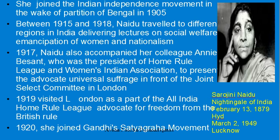Sarojini Naidu joined the Indian Independence Movement in 1905 at the time of the partition of Bengal. Between ages 15 and 18 she traveled to different regions of India delivering lectures and trying to understand the social welfare requirements of Indian women. In 1917, along with Annie Besant of the Home Rule Movement, she formed the Women's India Association — the first association of women in India — promoting universal suffrage, that is voting rights for everybody.